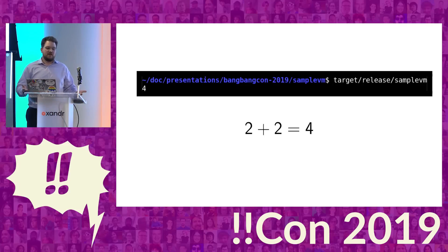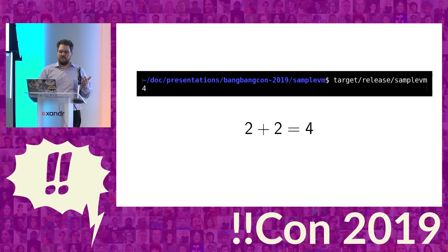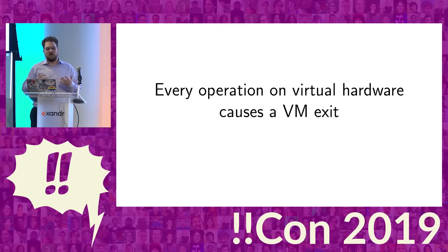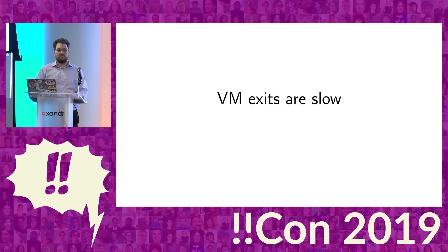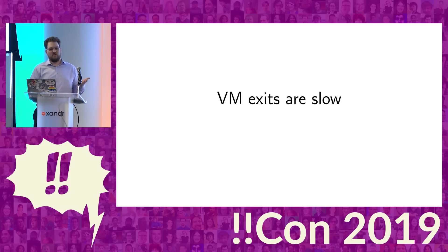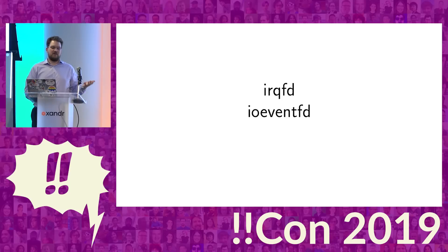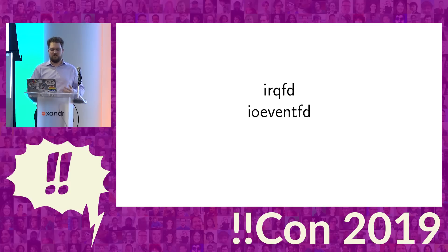So this gives you the basic idea of a virtual machine, but this means that every single operation on your virtual hardware causes a VM exit. VM exits are really slow — you don't want to have every operation on your virtual hardware do this. So there are a lot of ways to fix this. There are mechanisms like IRQFD and IOEventFD, which are ways to stream data in and out of the virtual machine using file descriptors.